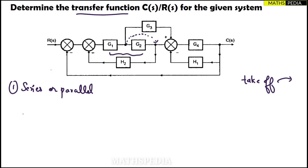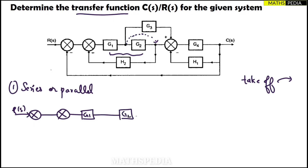Now I'll redraw the diagram. R(s) is sitting here, then one summing point, then another summing point came, then G1 will be here, then G2, then one more summing point, then G4, then the output C(s) will be there.